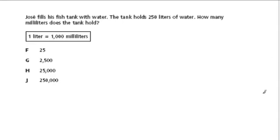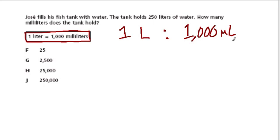In this problem, we've got a ratio, a unit ratio right here, which is that for every one liter, that equals 1,000 milliliters, which of course means that the milliliter is 1,000th of a liter.